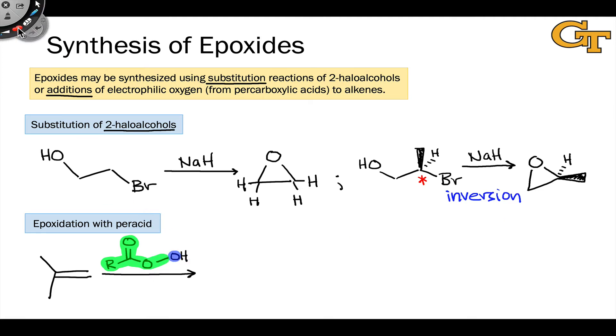Because of the unique structure of peracids, the addition of oxygen to the alkene happens in a single step. Both bonds are formed in a single elementary step, and I'll draw that in a second, but just to show the product, we have directly after treatment with the percarboxylic acid on the alkene, the epoxide product.